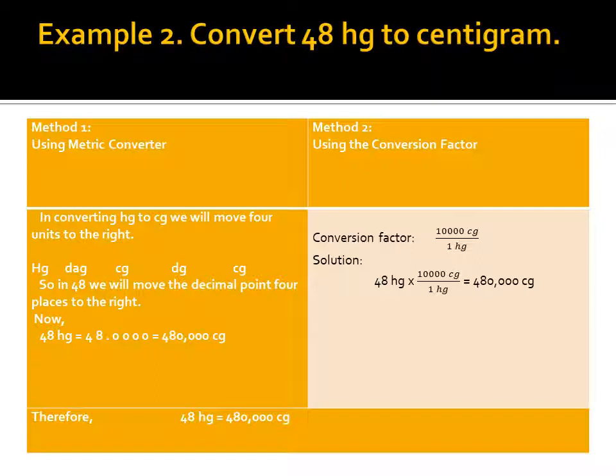Example 2: convert 48 hectograms to centigrams. Method 1 — using the metric converter: in converting hectograms to centigrams, we move 4 units to the right, so we move the decimal point 4 places to the right. Thus 48 hectograms = 480,000 centigrams. Method 2 — using the conversion factor: 1 hectogram = 10,000 centigrams. So 48 × 10,000 = 480,000 centigrams. Therefore, 48 hectograms equals 480,000 centigrams.